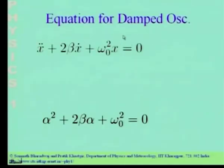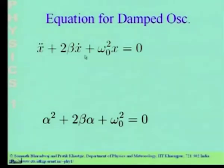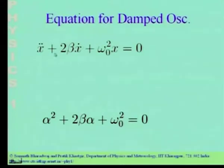The equation governing the damped oscillator is shown here: x-double-dot is the acceleration, and the whole equation of motion has been divided by the mass. The spring constant divided by mass is written as omega-naught squared, and the coefficient c divided by m has been written as 2-beta. We shall refer to beta as the damping coefficient.